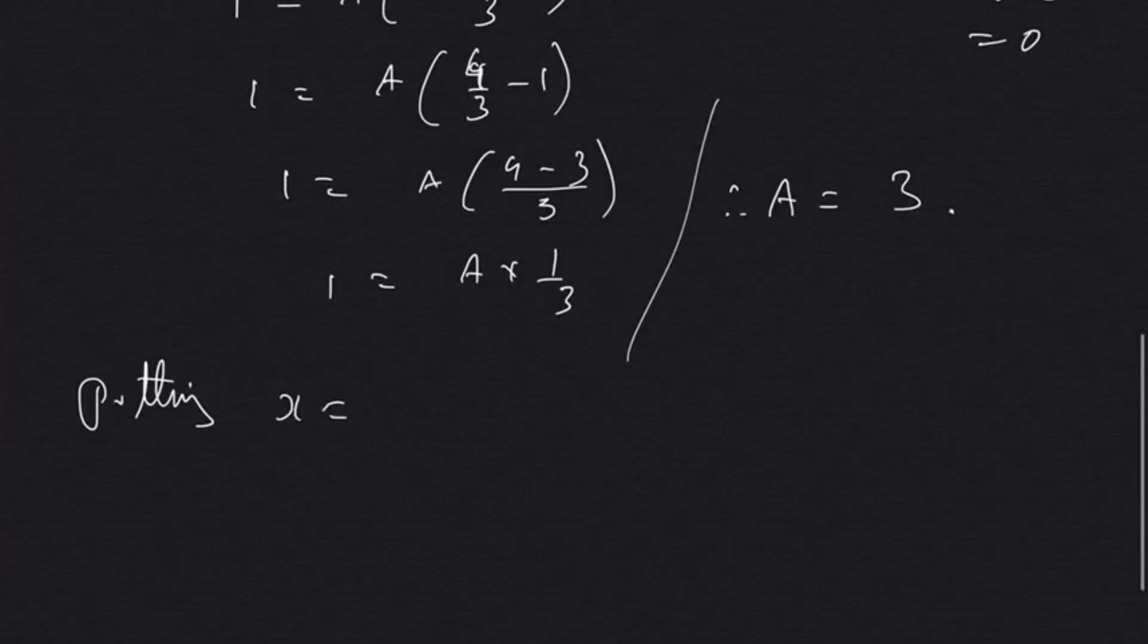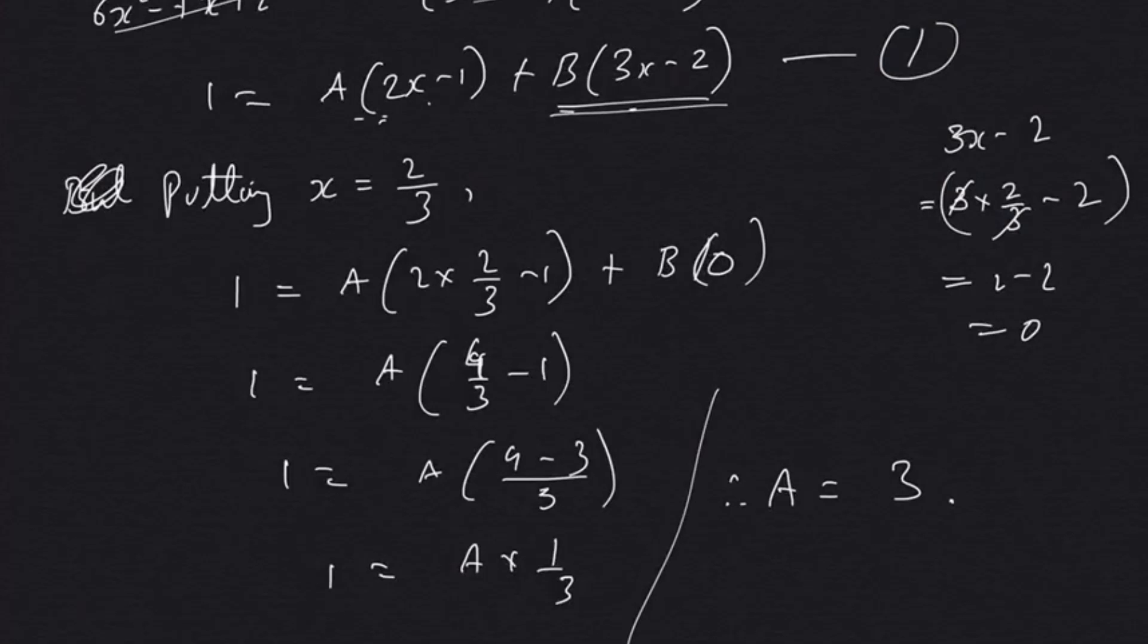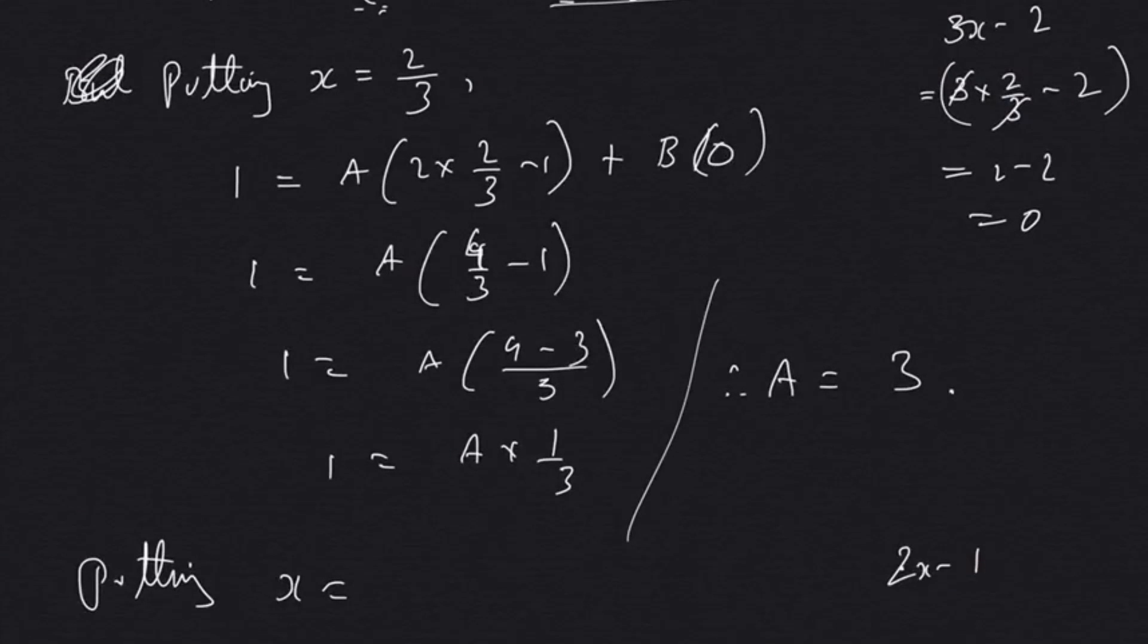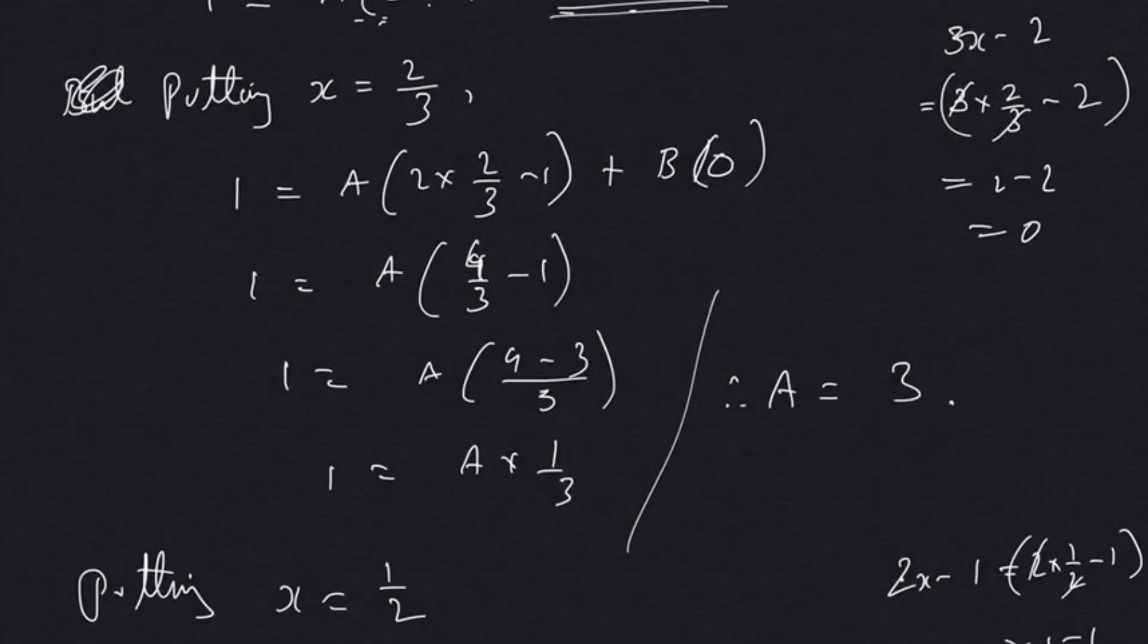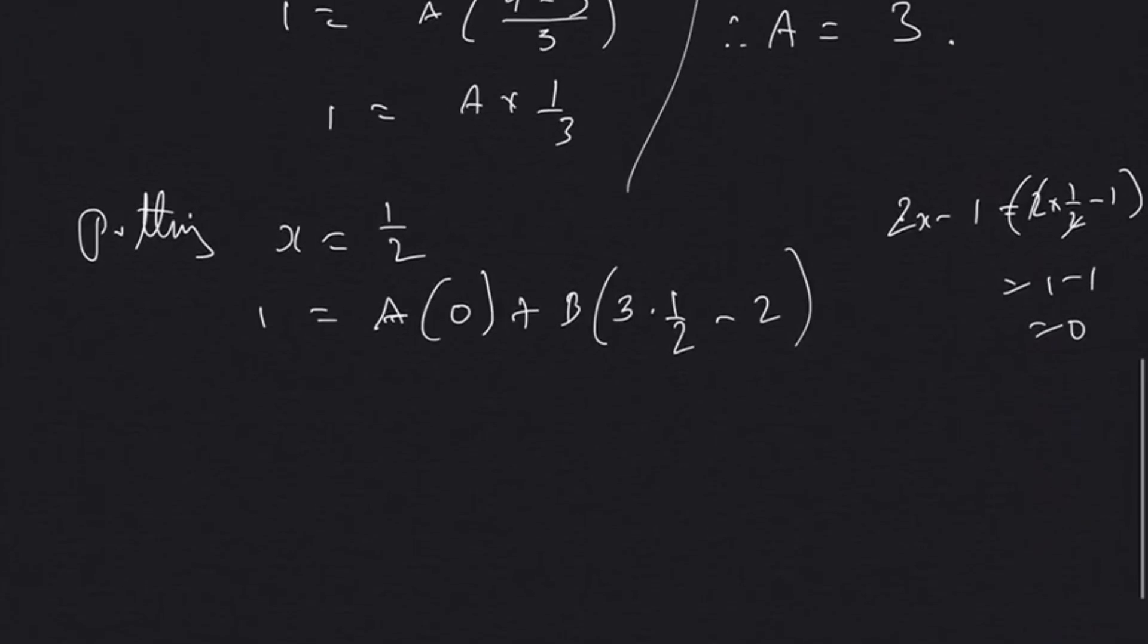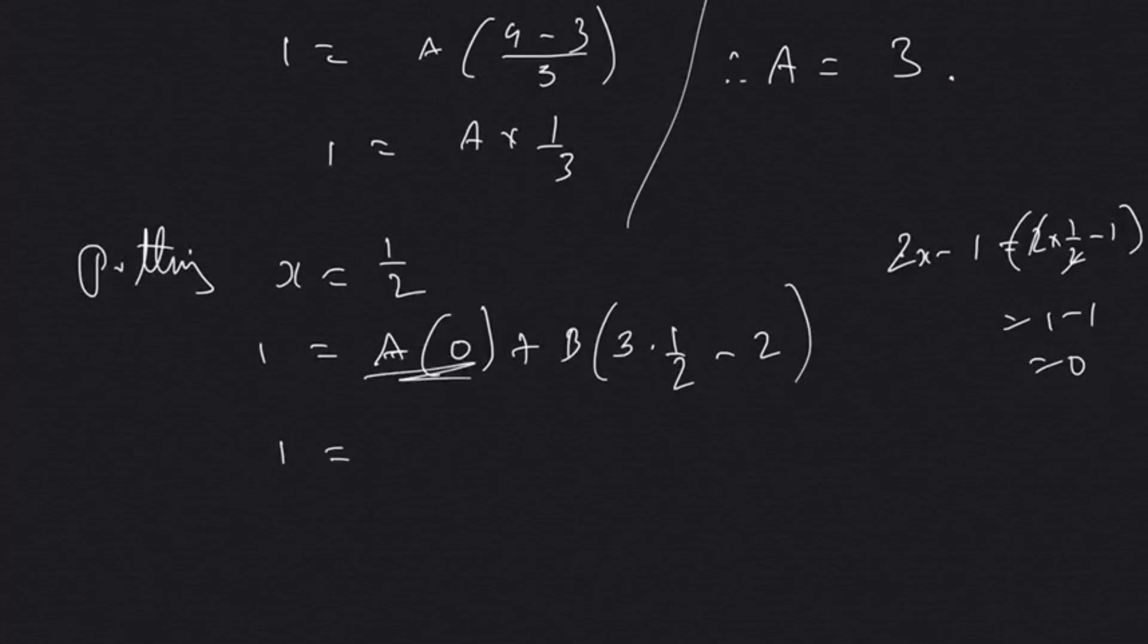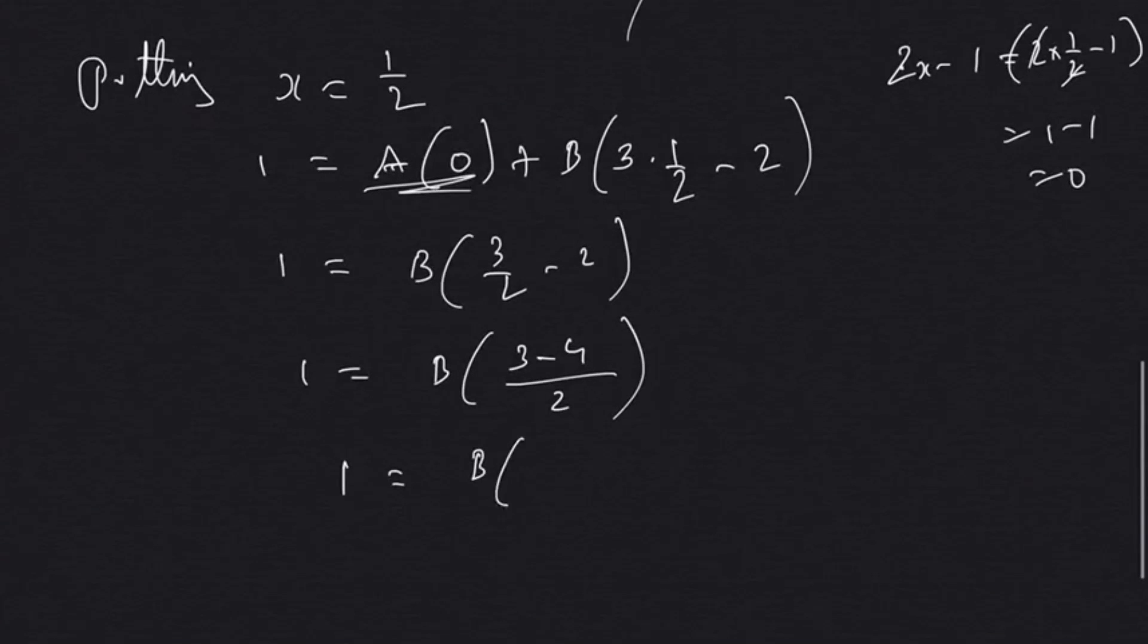Next, putting x equal to 1/2 to make the A term zero. 2x - 1, if x is 1/2, then 2 cancels, 1 - 1 equals 0. So in this equation we'll put x as 1/2. Therefore 1 = A(0) + B(3/2 - 2). That's going to be 1 = B(3/2 - 2), so 1 = B(-1/2). That will be 2 = -B, or B = -2.